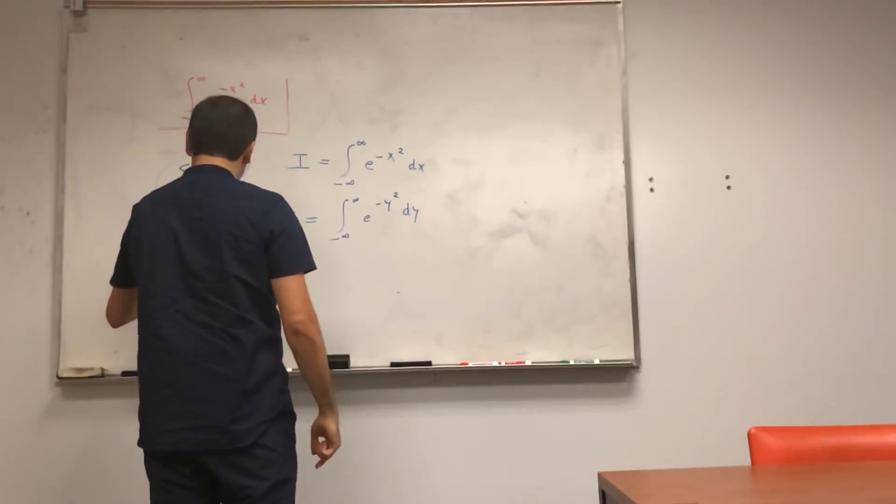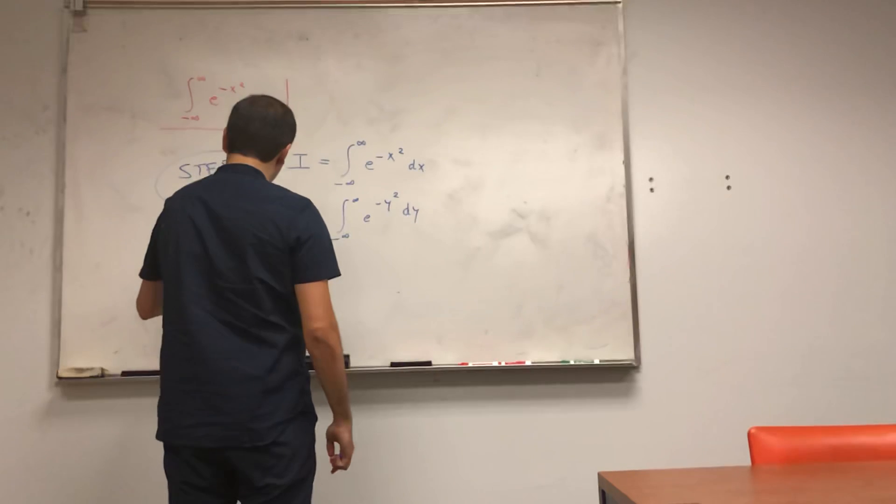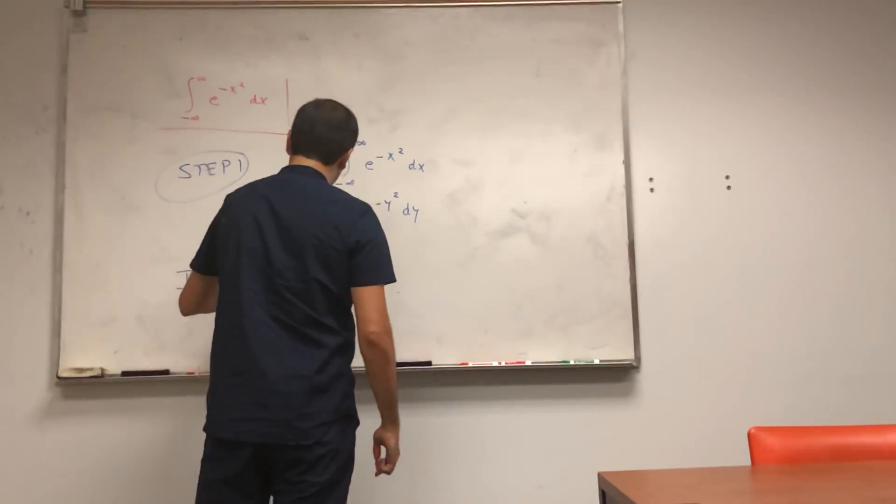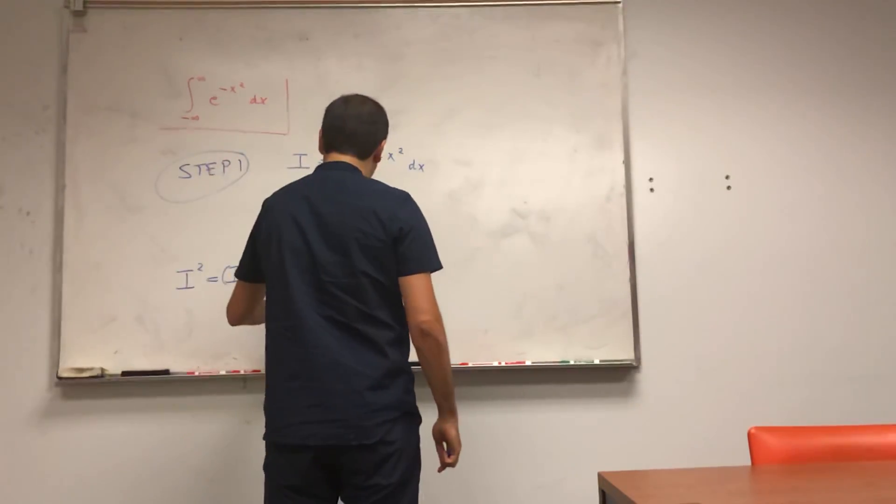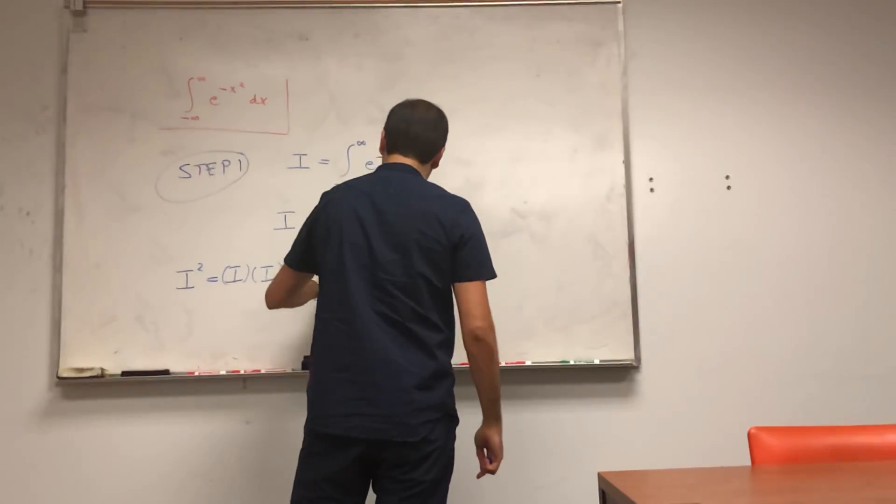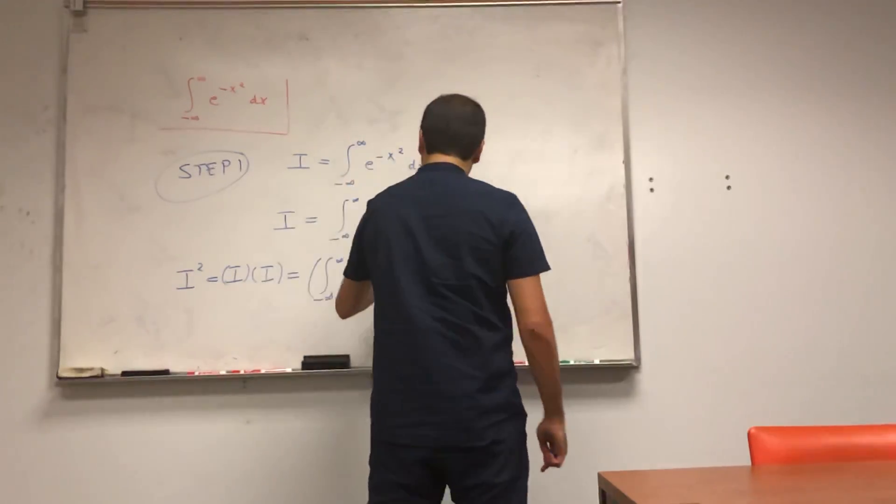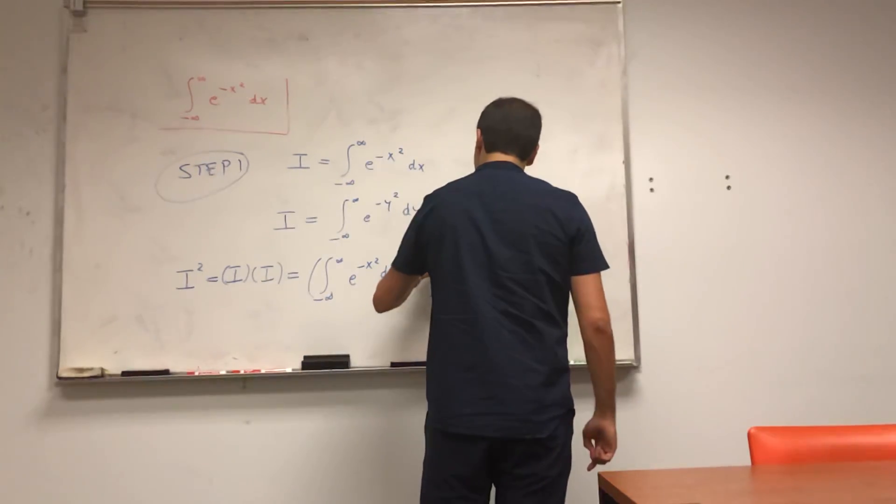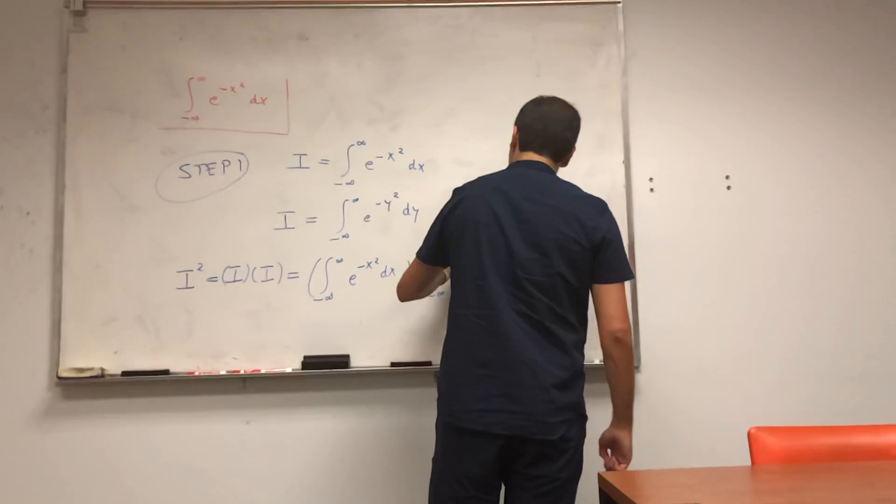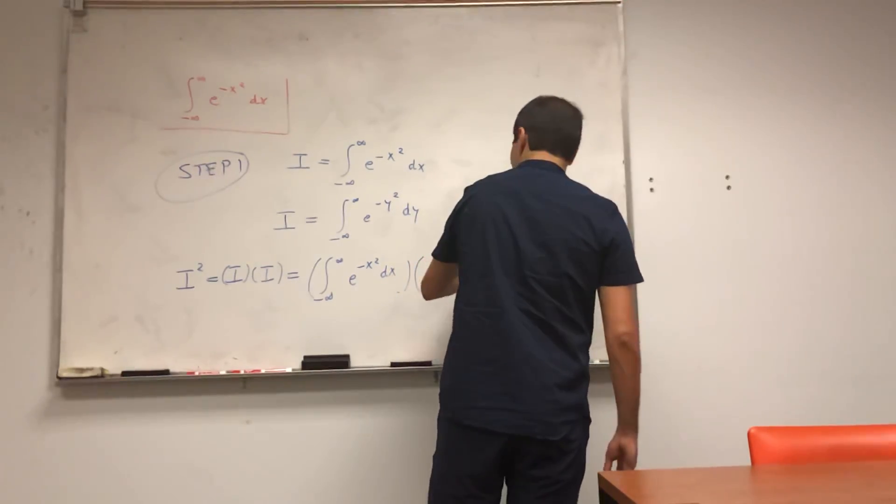So I², which is I times I, well, that's the integral from -∞ to ∞ of e^(-x²)dx times the integral from -∞ to ∞ of e^(-y²)dy.